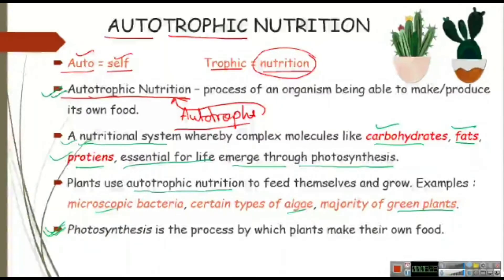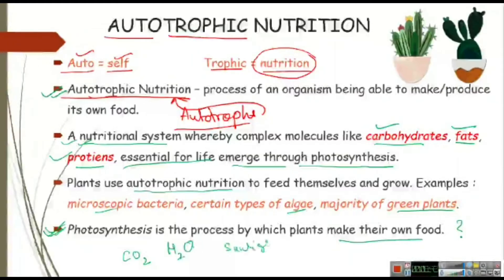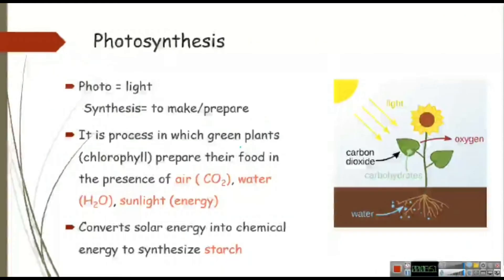Photosynthesis is the process by which plants make their own food. But plants cannot make food if they don't have any materials. What are those materials? What are the things that plants need to make their own food? The things are carbon dioxide, water, and sunlight. These are the things that plants need for photosynthesis.